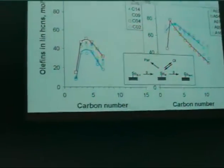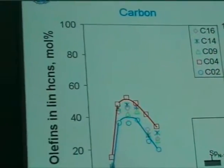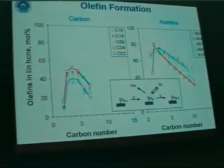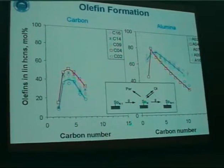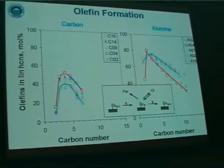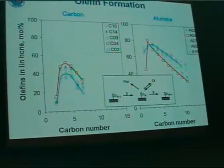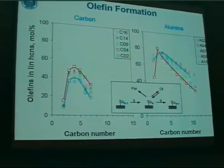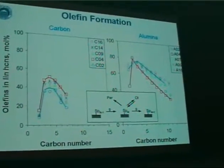Potassium is also known to increase olefin formation in iron-based Fischer-Tropsch synthesis. Olefins are the main primary products of Fischer-Tropsch synthesis — they can re-adsorb and be hydrogenated to form paraffins or initiate further chain growth. To express the extent of this secondary reaction, we plot the molar contents of olefins in the linear fraction of the corresponding hydrocarbons as a function of carbon number. In the carbon series we find fairly low olefin contents, indicative of a large extent of secondary reactions. With the alumina series, olefin contents are more typical of potassium-promoted iron catalysts. We do not see a clear crystallite size trend in those two series.